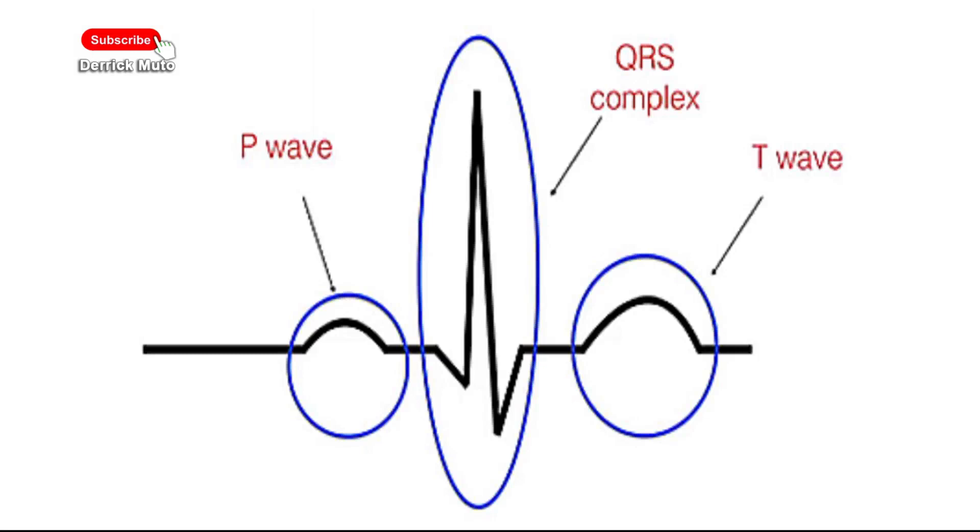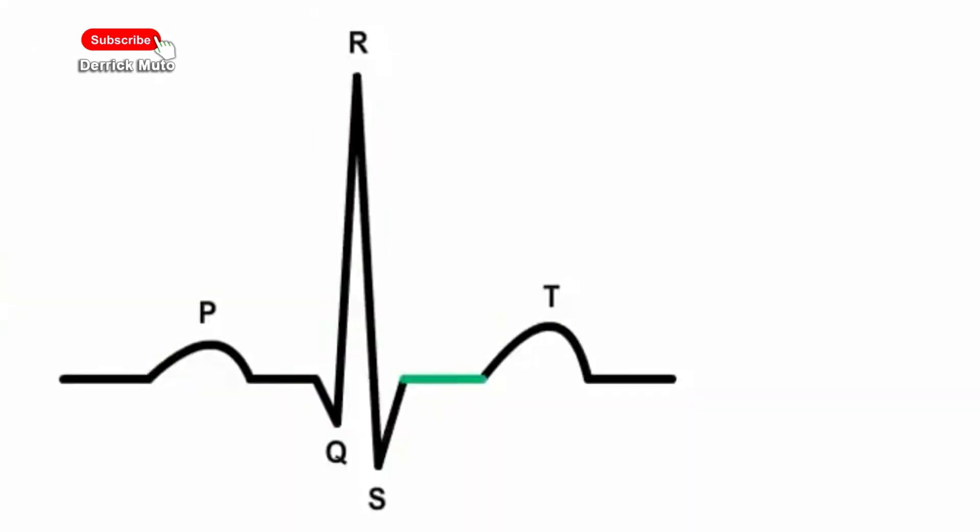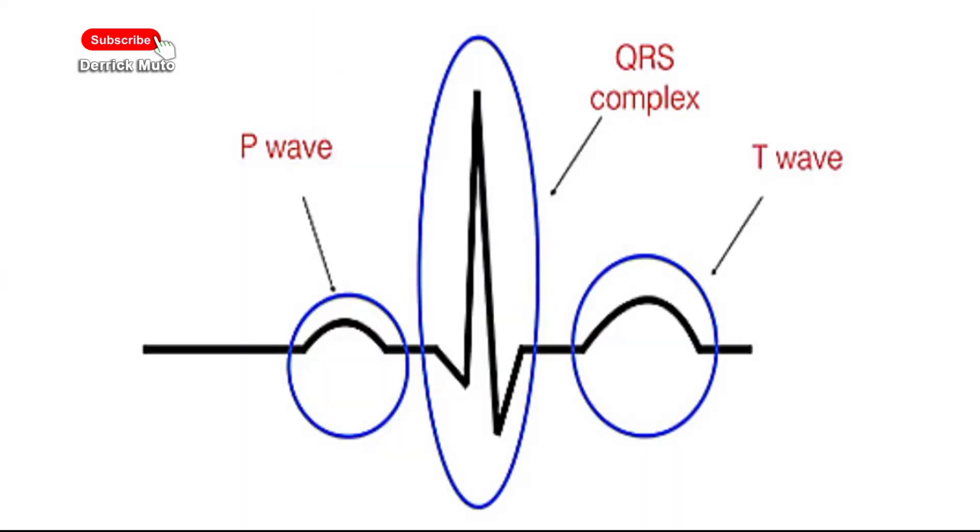Here, the contractile fibers or myocytes or cardiac muscle cells depolarize and contract very rapidly, inducing ventricular systole. It normally lasts for about 80 to 100 milliseconds. Atrial repolarization also occurs at this time, but any atrial activity is hidden upon the ECG by the QRS complex.